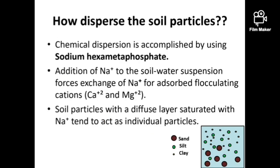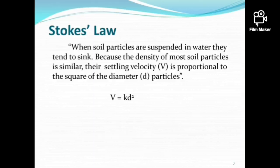Chemical dispersion of soil takes place by adding sodium hexametaphosphate as the sodium ion-releasing agent into the soil suspension. Sodium cations exchange with calcium and magnesium cations, which are the flocculating agents in the soil medium. Soil particles with a diffuse layer saturated with sodium ions tend to act as individual particles.